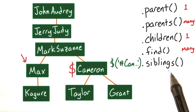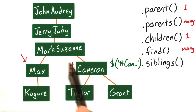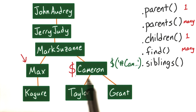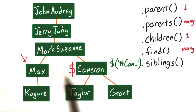Finally, there's .siblings. .siblings returns a jQuery collection of all of my siblings, meaning elements that have the same parent. In this case, Max and I both have the same parent, so calling .siblings would return Max. And once again, I can pass a selector into siblings if I need to get more specific with my selection.